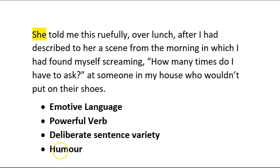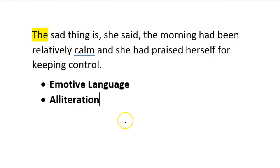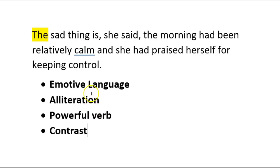And then, of course, you've got humour. The humour is losing your temper and screaming at someone just because they can't put their shoes on properly — it's just not proportionate. You will spot other words in there which are deliberately emotive. The other thing you'll notice is that emotive language comes up much more frequently than anything else. 'The sad thing is, she said, the morning had been relatively calm.' So you've got the contrast between sad and calm. 'And she had praised herself for keeping control.' That's an emotive word — it's also quite a powerful verb because it tells us exactly what her emotion is. So we have the contrast between sad and calm, keeping control and not keeping control, and the powerful verb.